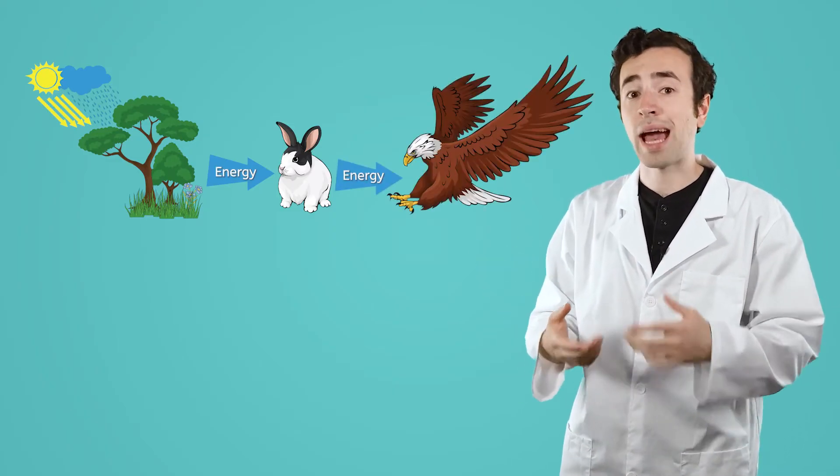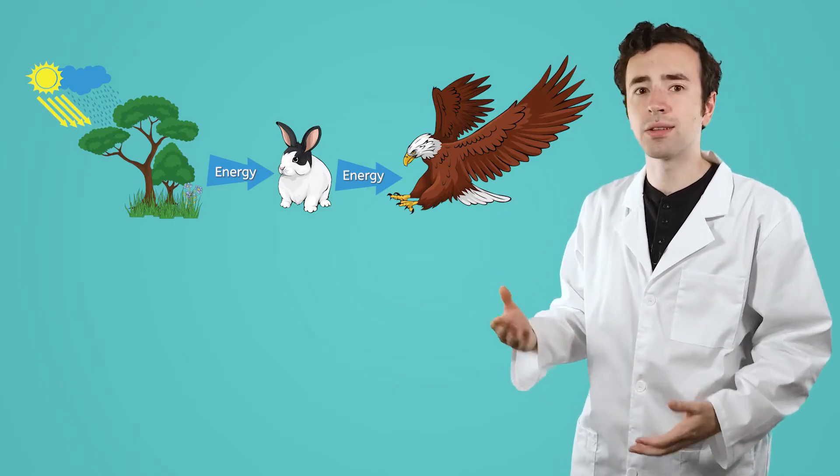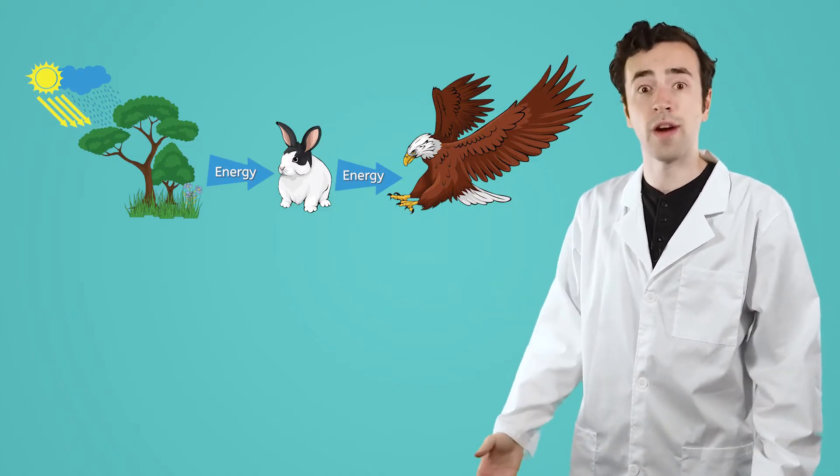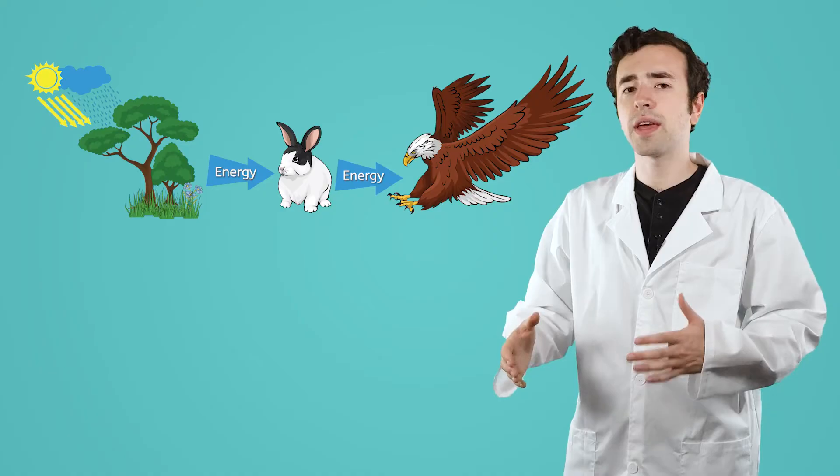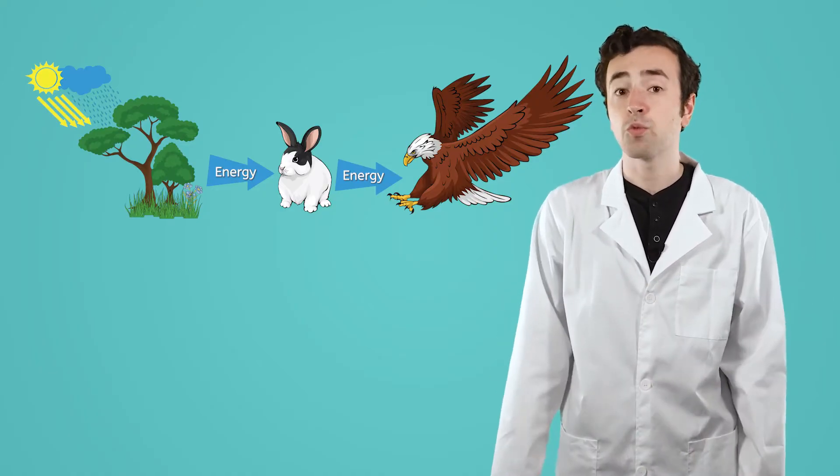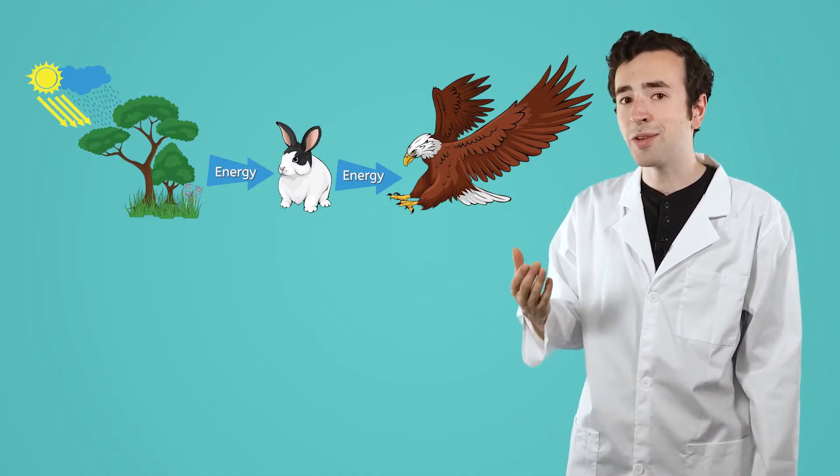A rabbit, for example, takes in energy by consuming grass. The energy created by the grass through photosynthesis then passes to the rabbit, which in turn passes to any predators that eat the rabbit, such as an eagle or a fox. Animals, whether they eat plants or other animals, rely on the energy created by producers.